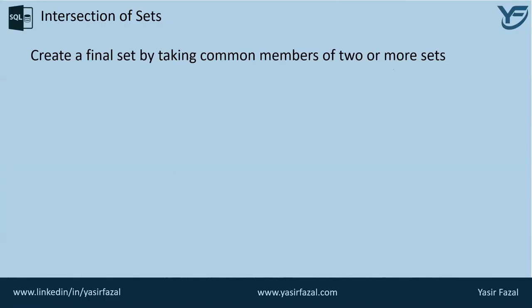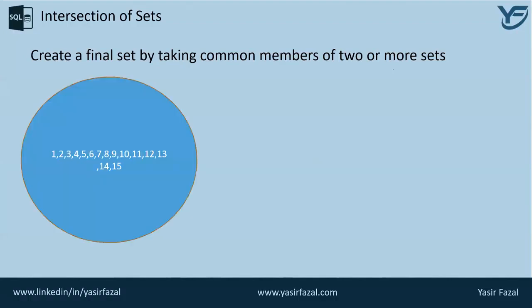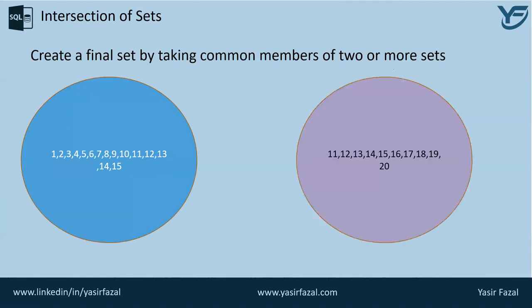So how will the intersection happen? Let's suppose I have one set which contains the real numbers from 1 to 15, and I have another set which also contains the real numbers 11 to 20. I'm going to take the common elements between these two sets and create a resultant set, which is the intersection of these two sets.